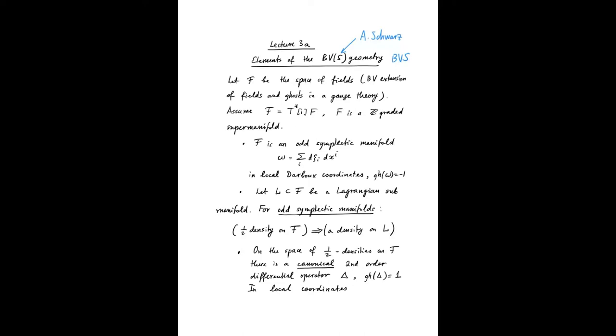Let's consider a finite dimensional analog of the BV framework. Assume that F is a finite dimensional version of a space of fields, a BV extension of fields and ghosts in some gauge theory. We can always assume that F is a shifted cotangent bundle of F̃, where F̃ is some Z-graded supermanifold, for example, with coordinates x, eta, and beta.